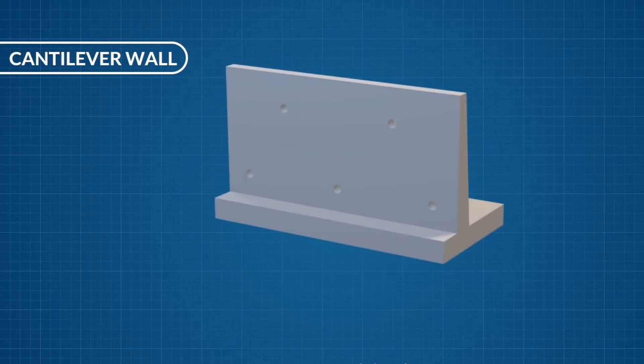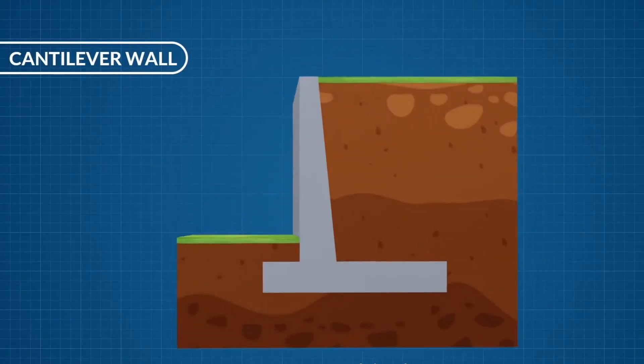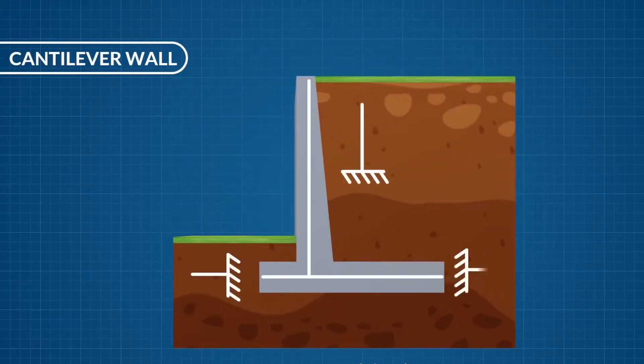The second type of wall is the cantilever wall. This is the most common type of retaining wall. These walls are typically used up to a depth of eight meters below ground level. For this wall type, the stem, toe and heel act as one-way cantilever slabs. The stem acts as a vertical cantilever under the lateral earth pressure.